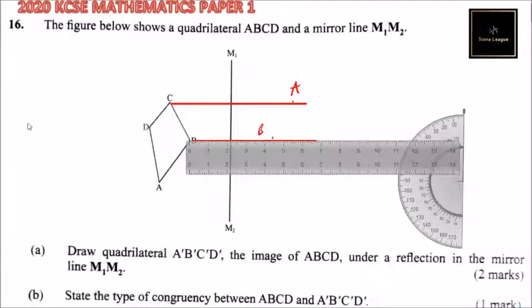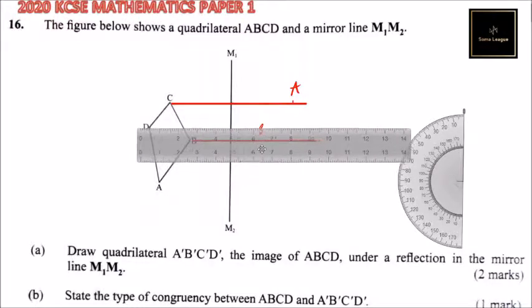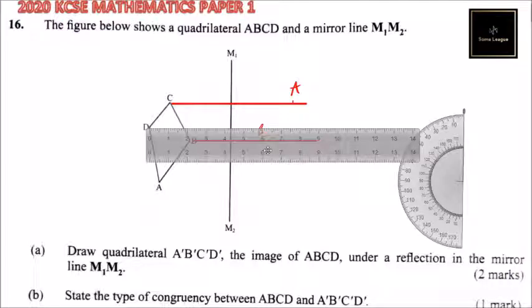I can also identify, you can use a protractor as well. I can also identify where D is. So this is where I have my D. As long as you make an angle of 90. So this is 4.3, so it is 8.6.